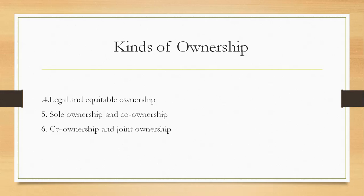In sole ownership, it is only one person who is the owner. But in case of co-ownership or concurrent ownership, two or more persons could be there. A very common example of co-ownership is partners — they are co-owners of the goods, the stock in trade, the lease properties and premises where they conduct the business, and the debts which customers owe to them. So if two partners have 10,000 in a bank account of their partnership, it means there is a debt of 10,000 owing by the bank to both of them, and not two separate debts of 5,000 due to each individually.